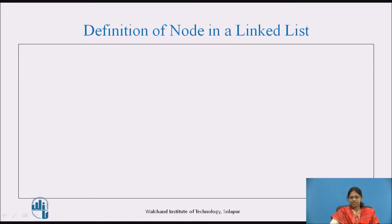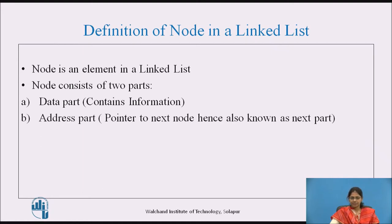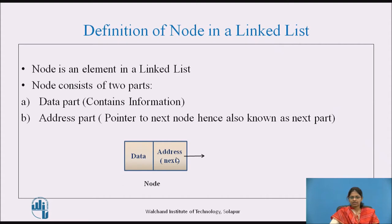Node is an element in a linked list. A node consists of two parts. The first part is the data part, which contains information. And the second part is called the address part, which is nothing but the pointer to the next node, and hence it is also known as the next part. This figure represents a node, which shows that a node contains two parts: the data part, which contains some information, and the address part, which holds the address of the next node.